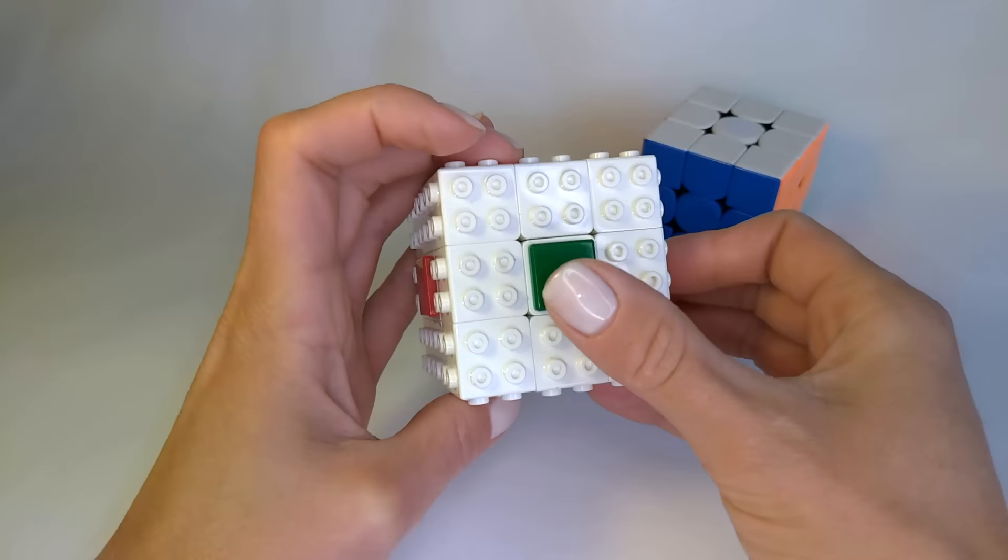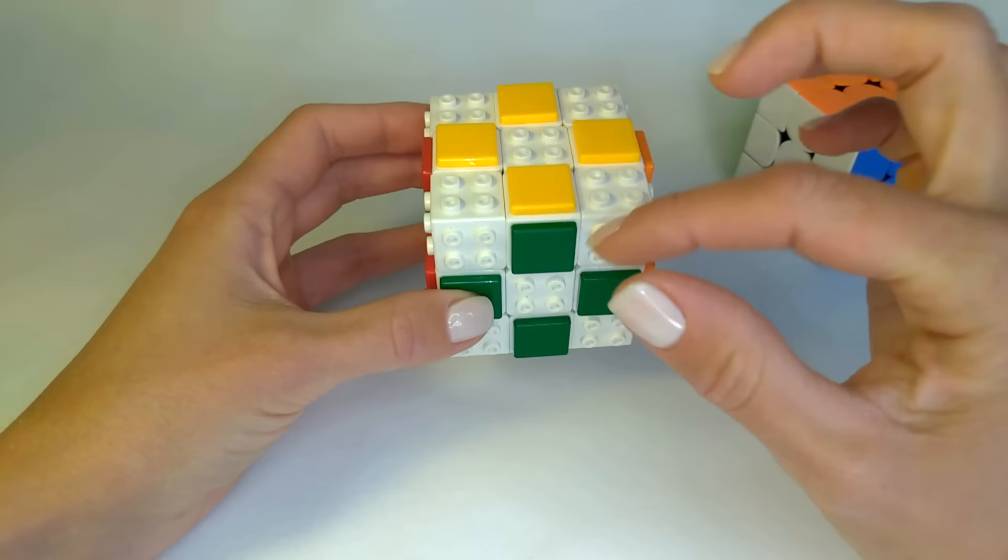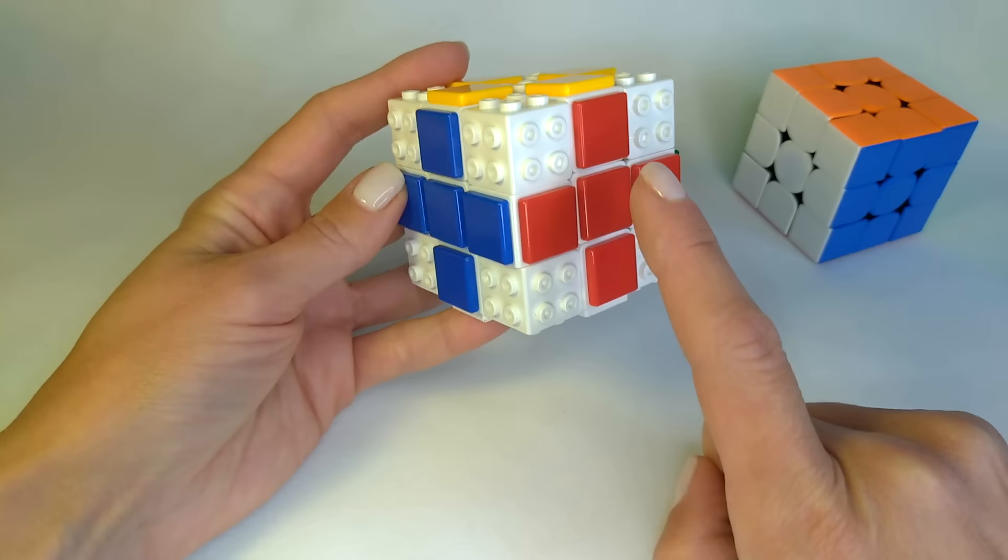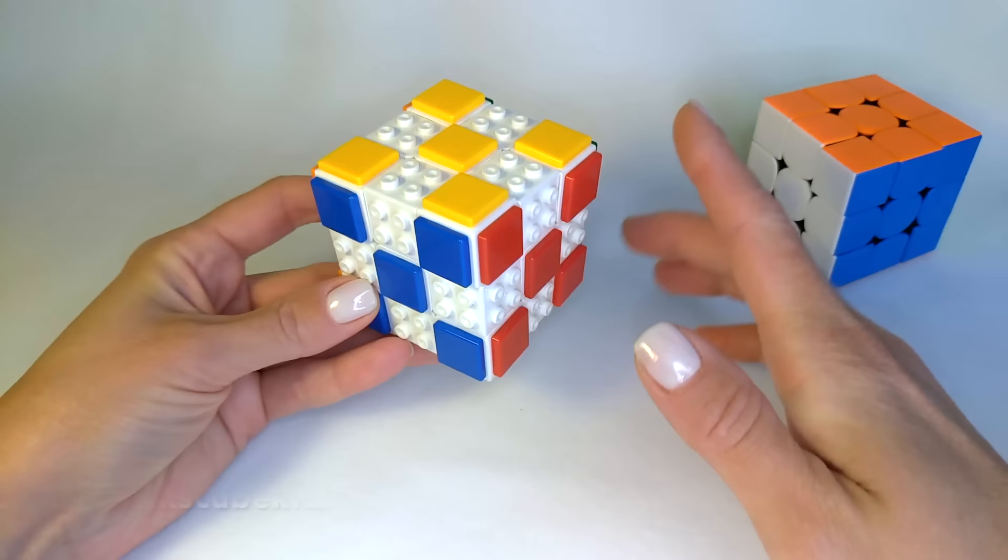The second type of piece is an edge. The edge has 2 colors. An edge always fits between 2 centers. For example, this blue and red edge fits between the blue and red centers.